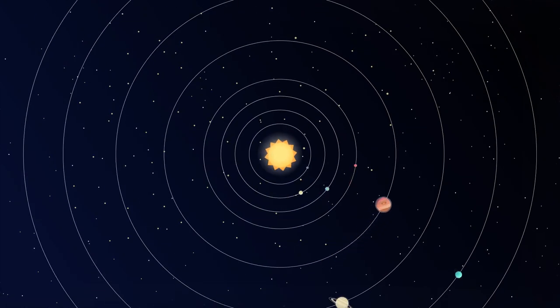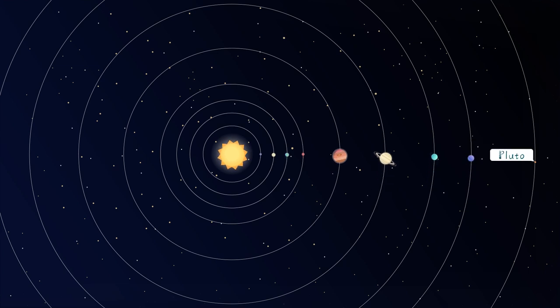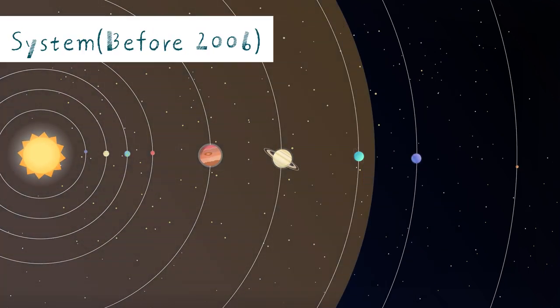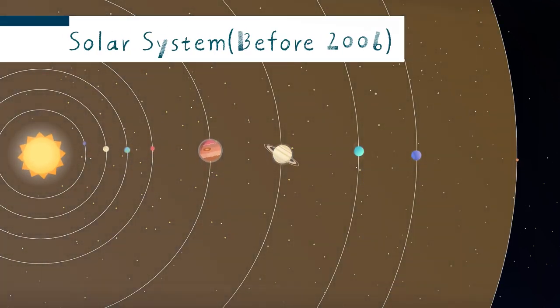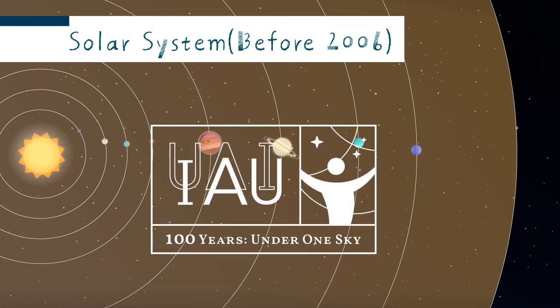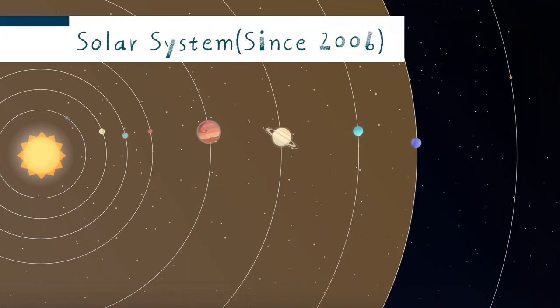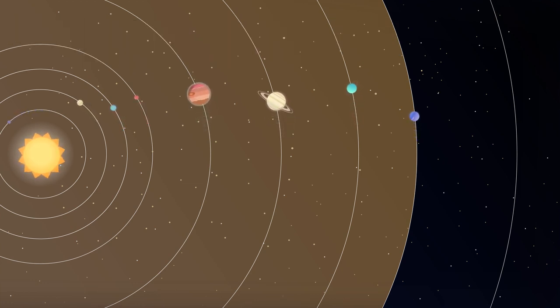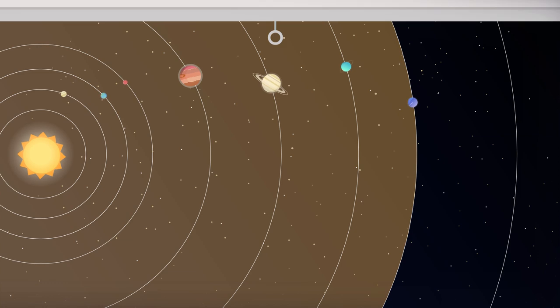Does anyone remember Pluto? Pluto used to be known as the ninth planet of the solar system. But the International Astronomical Union decided to remove Pluto from the list of planets in 2006. Instead, they created a new category called dwarf planets.